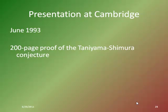By June 1993, Wiles has a 200-page proof of the Taniyama-Shimura conjecture. In the last year or two before that, he had opened up to one of his colleagues at Princeton, sworn him to secrecy, and together they were able to bounce ideas that led to this 200-page proof.